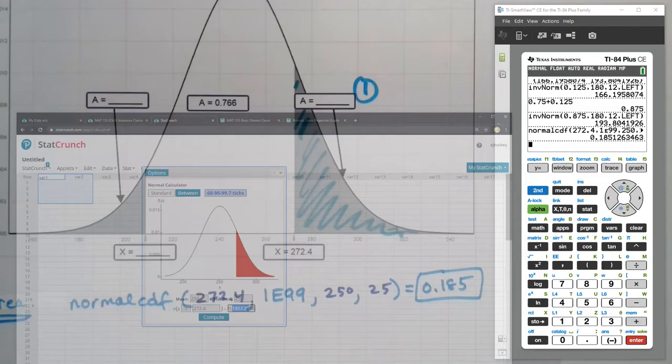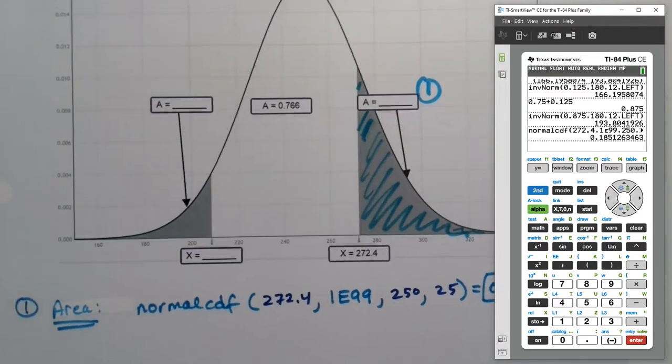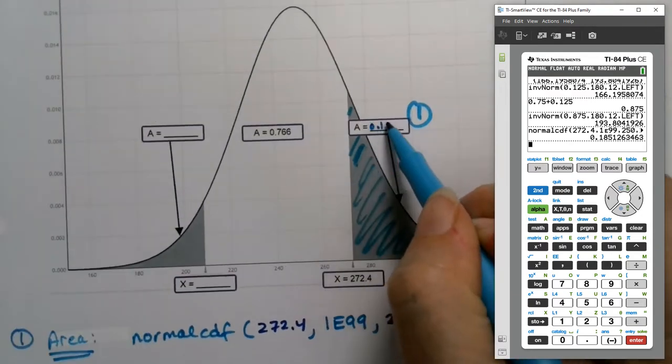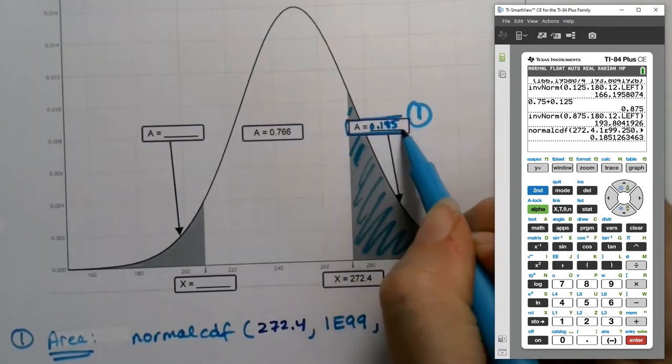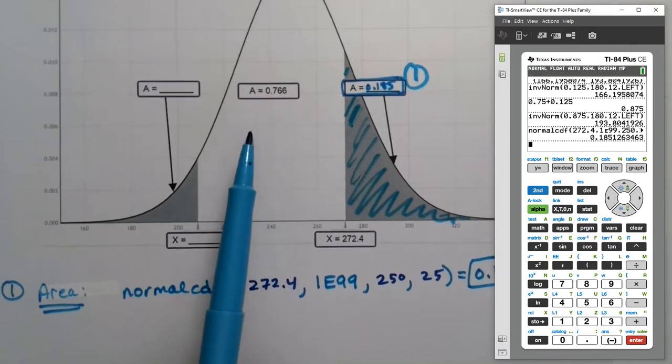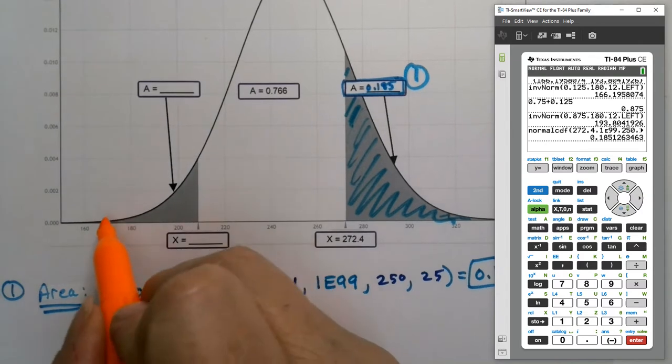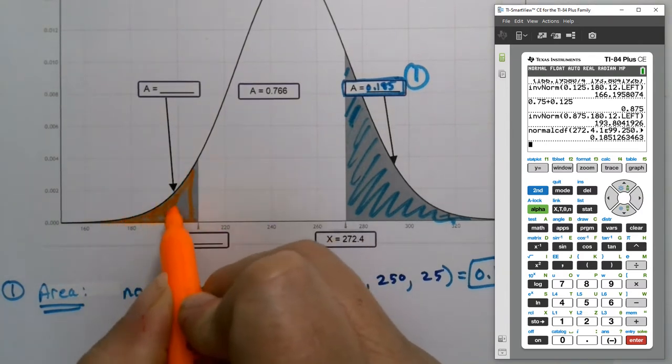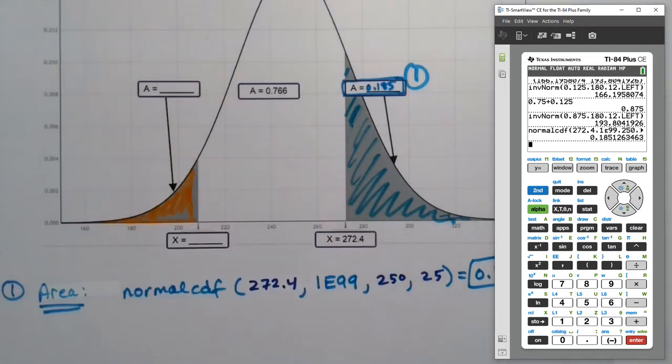Okay, then, now that I know that this area here is 0.185, then I should be able to use that to help me find the other areas. I know that the middle zone is 0.766, so that means that I know that this orange zone over here, I can find that area right there. So that'll be number two. I'll find that second.